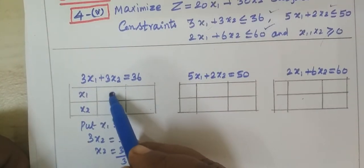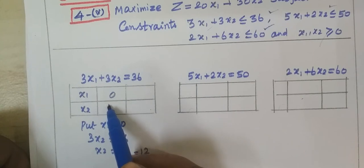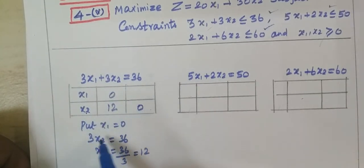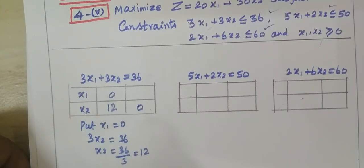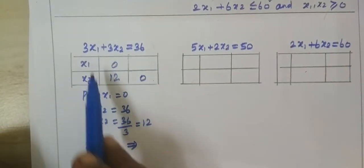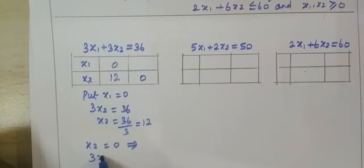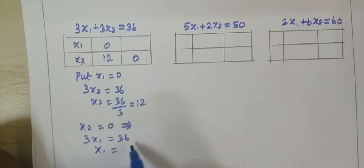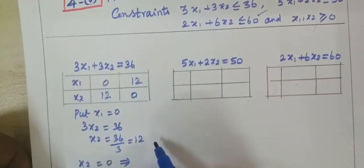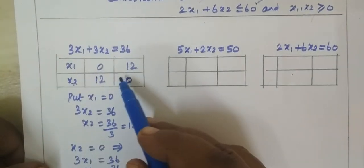Therefore x2 equal to 36 divided by 3, equal to 12. So the point is (0, 12). Now substitute x2 equal to 0. Then 3x1 equal to 36, therefore x1 equal to 36 divided by 3, equal to 12. So the second intercept is (12, 0). One point of intersection is obtained.